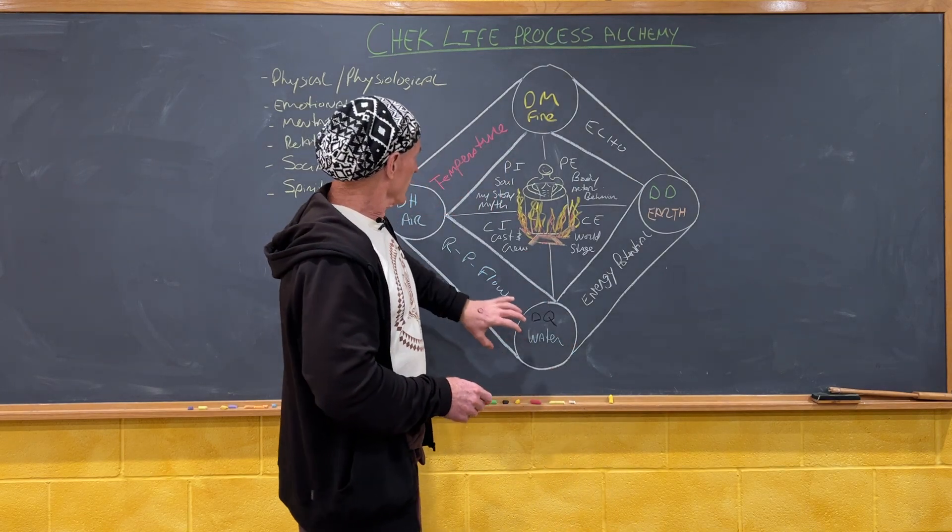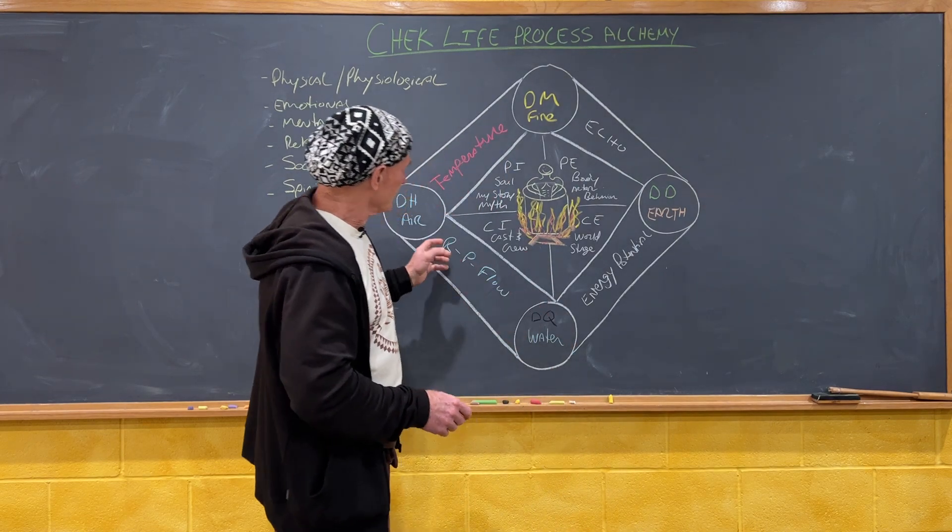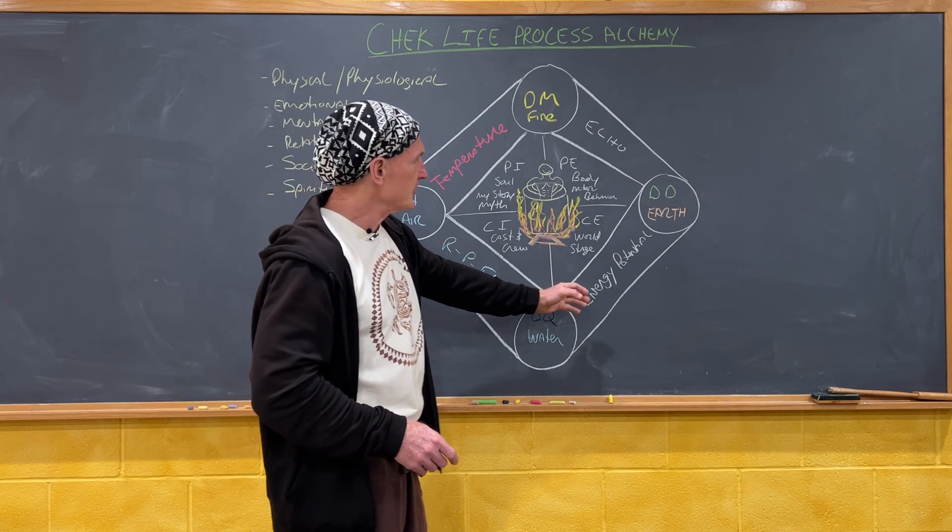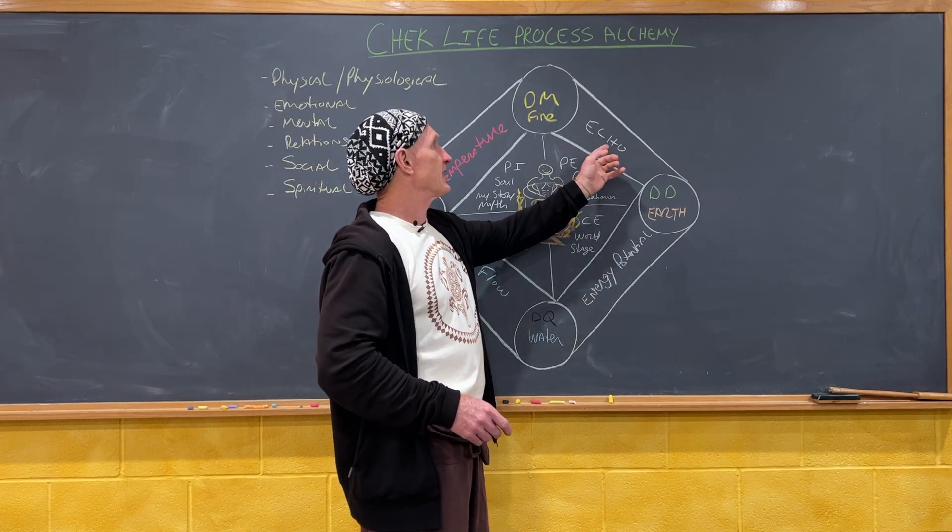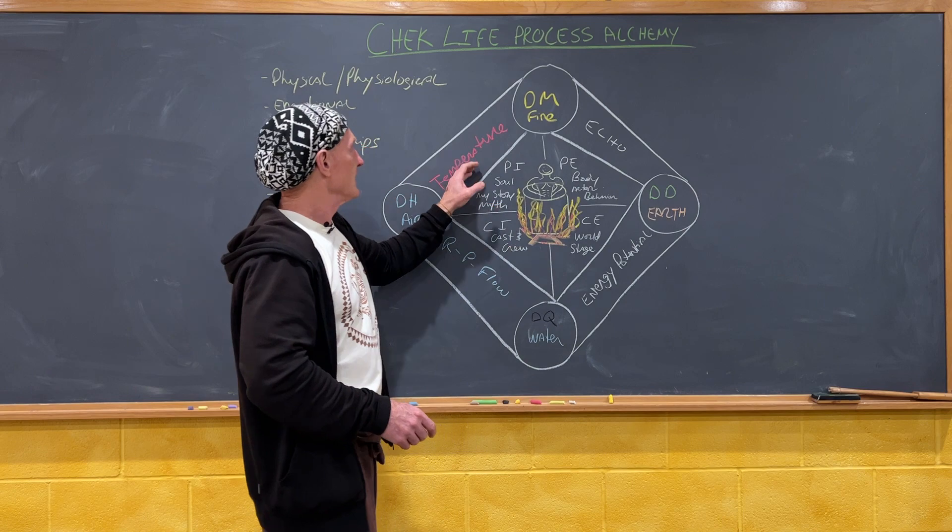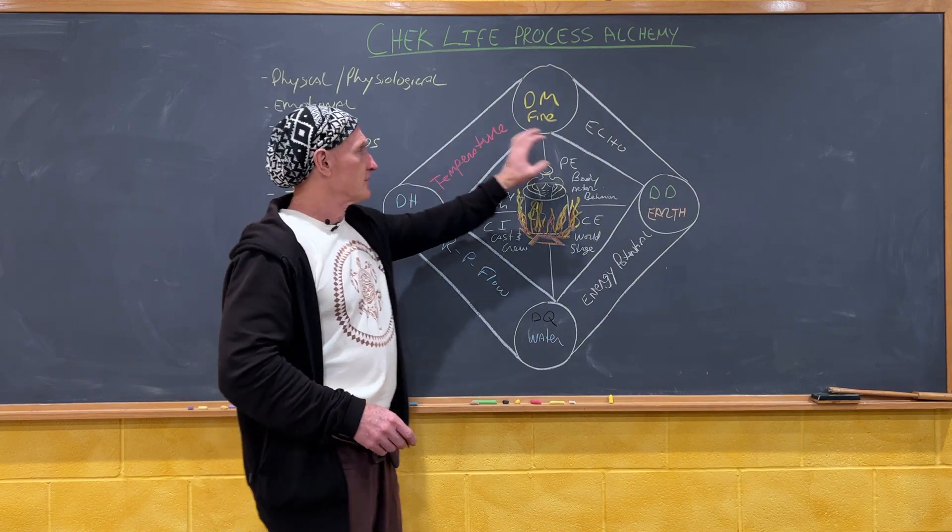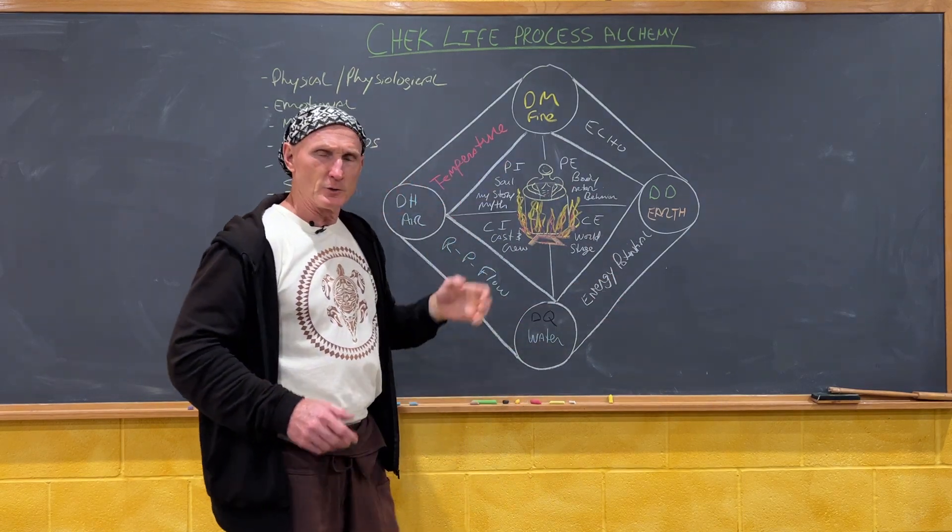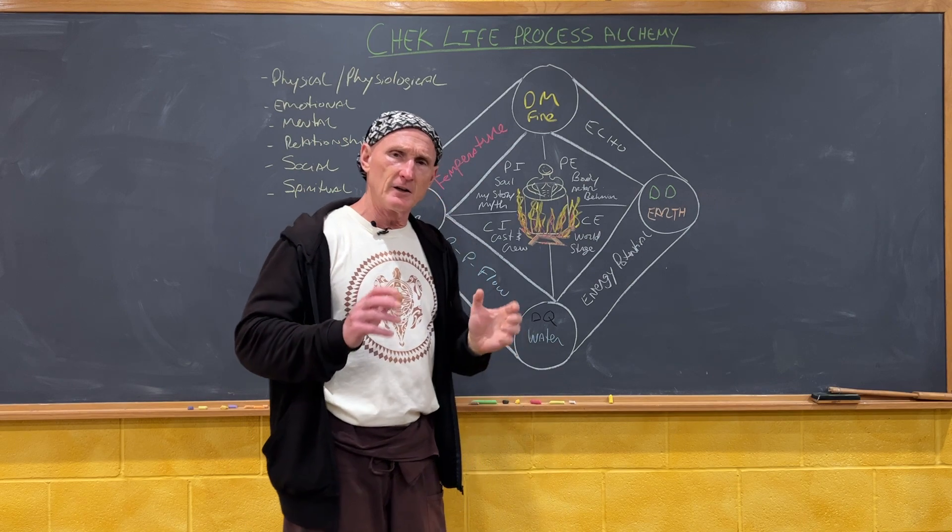And then here we have the control functions: rhythm, pressure, and flow, energy, potential energy, chemistry, hydration, organisms, and temperature. These things all become much more clear later when we get into the deeper aspects of alchemy.